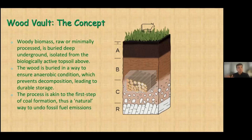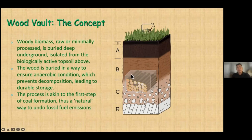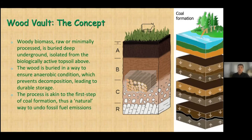Now, the concept of a wood vault: woody biomass, raw or minimally processed, is buried below the topsoil. This is very different from soil carbon sequestration, which is really at the surface level — we're talking about something way below, where there's no biologically active process going on. The key is that it's kept at anaerobic condition, which prevents decomposition, leading to durable storage. The process is in fact akin to coal formation, so it would be no surprise if this turns out to be a very natural way to undo fossil fuel emissions.